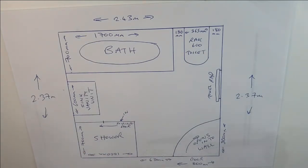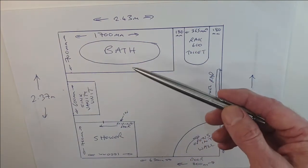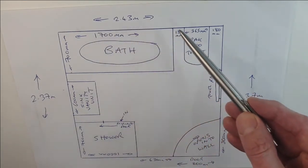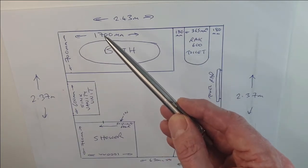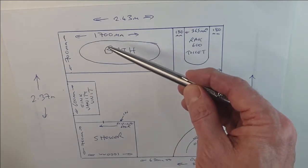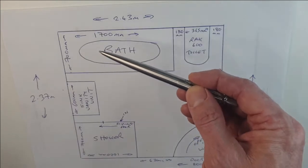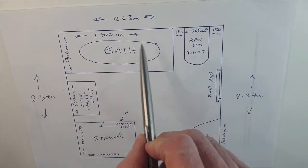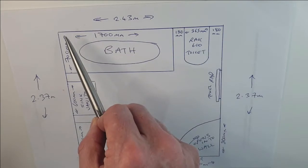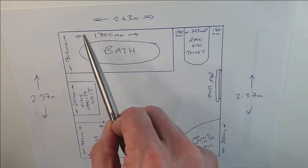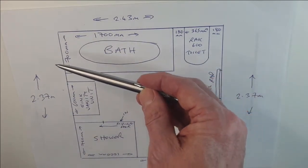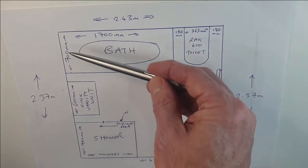We knew we wanted a bath and a separate shower, so we had to work out the best place for each. This wall had an existing large window, and because the window came down to quite a low level, the area had a very low height. That made it the perfect situation for the bath — because a bath is low level, you can place it adjacent to the window. So the bath sits underneath the window, and that gave us the starting point for the room.